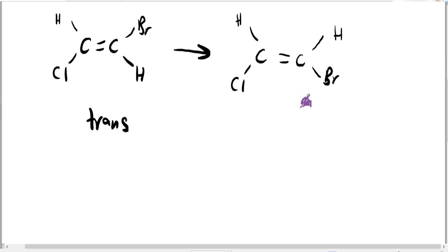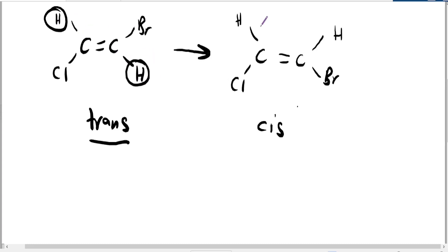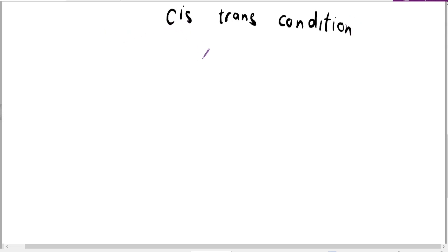The compound after flipping is what we call trans, and the original is what we call cis. In the trans isomer, the same groups must be facing each other at 180 degrees. In the cis isomer, the same groups must be on the same side facing each other.